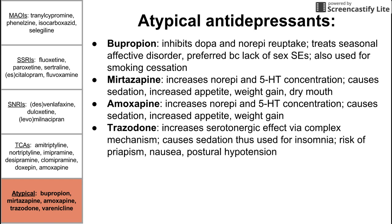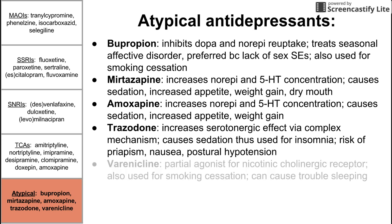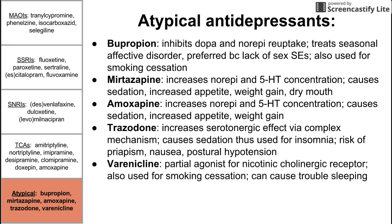Trazodone increases the serotonergic effect via a complex and somewhat unknown mechanism. It causes sedation, so it's also used for insomnia. There is a risk of priapism, and it also causes nausea and postural hypotension. Lastly, varenicline is a partial agonist for the nicotinic cholinergic receptor, used for smoking cessation, and can also cause trouble sleeping.